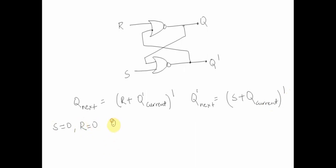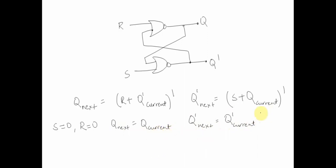Let's assume S equals zero and R equals zero. In this case, Q_next equals the bar of Q_current_bar, which equals Q_current, and Q_bar_next equals Q_bar_current. When S and R are both zero, the next state depends on the current state — meaning we are able to store or hold a value. So the first property of memory is satisfied.